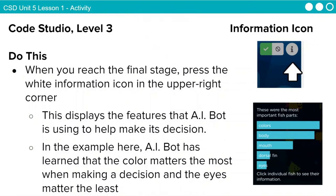When you reach the final stage, after you've done your testing and recorded it in your document, press the white information icon in the upper right-hand corner. This displays the features that AI Bot is using to help make its decision. In the example shown, AI Bot has learned that color matters the most when making a decision and the eyes matter the least.